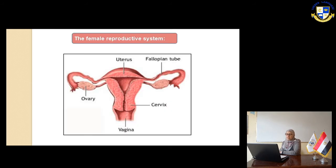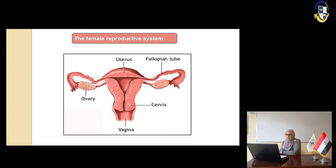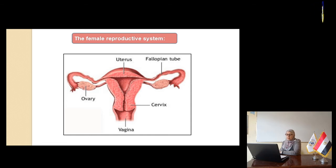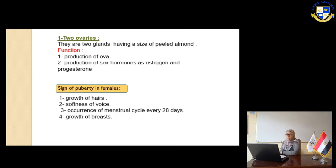Slide number 7. Here we have the female reproductive system. It consists of the vagina, the ovaries, the fallopian tubes, and here in the middle we can see the uterus.